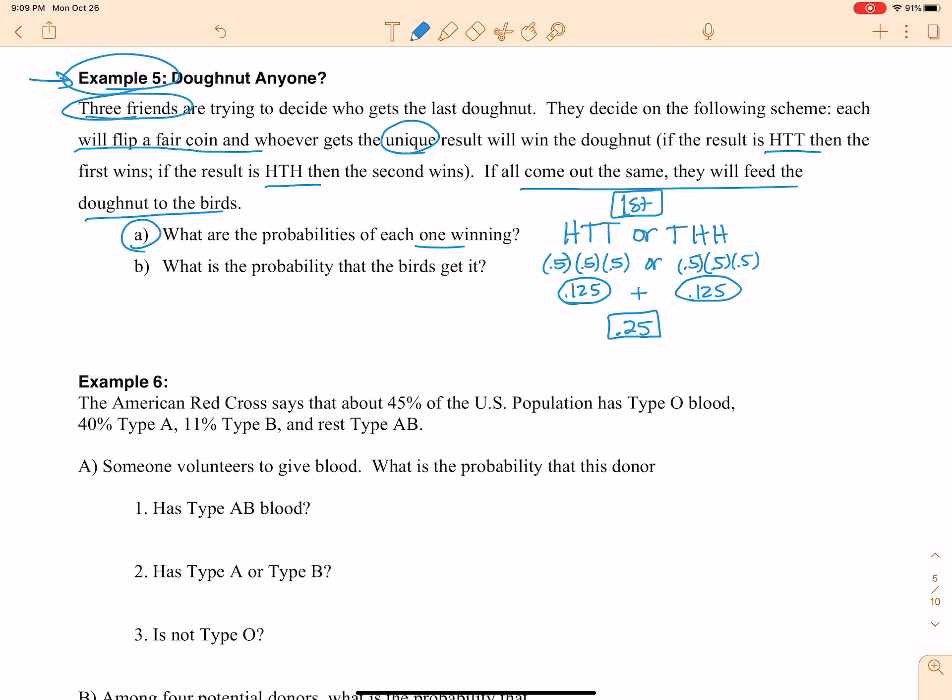Why is that the probability of each one winning? Because if the second person, if you look at the second person here, this probability, this probability is that, this probability is that. So the probability of any single person winning is 0.25.